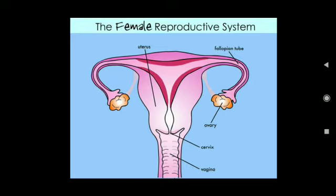When the ovary releases an egg during puberty and sperm is present in the fallopian tube, the sperm meets with the ovum and gives rise to the formation of a fertilized egg. The two oviducts unite into an elastic bag-like structure known as the uterus.